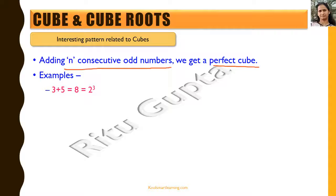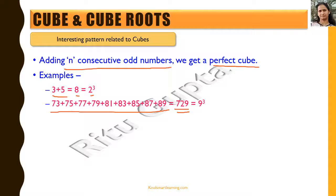For example, 2³ = 8 = 3 + 5. For 9³ = 729, it equals the sum of 9 consecutive odd numbers: 73 + 75 + 77 + 79 + 81 + 83 + 85 + 87 + 89. Here n = 9, and we have exactly 9 consecutive odd numbers added together to give us the cube of 9.